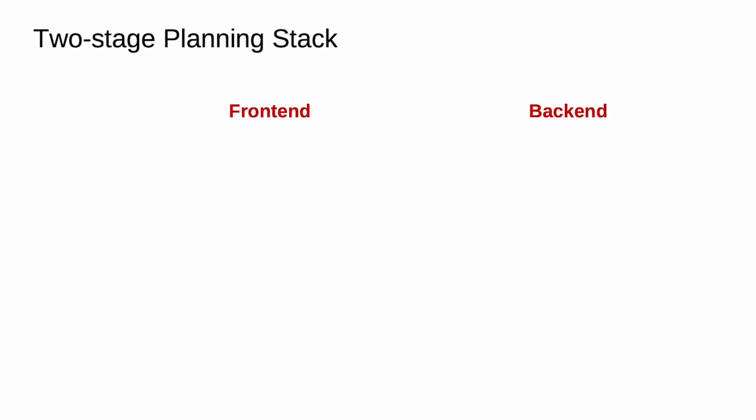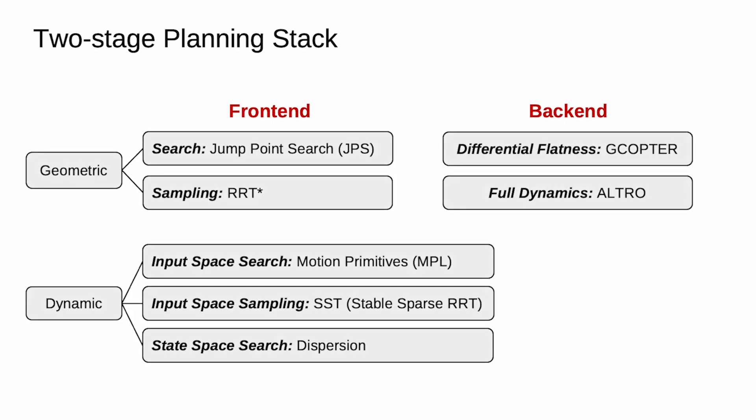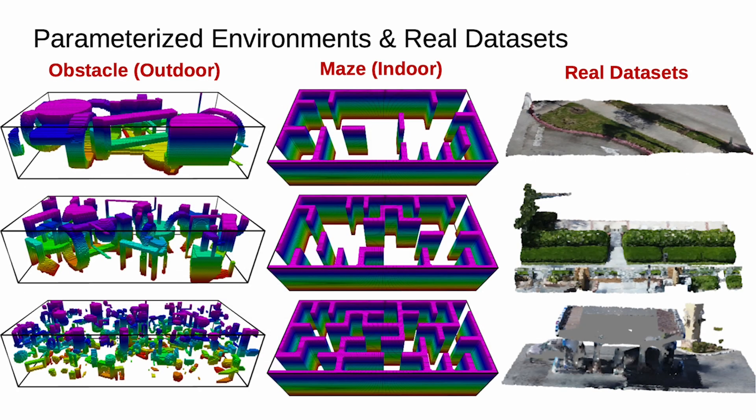For the open-source planning stack, we took a modular approach so that both front-end planners and back-end planners can be quickly swapped. We select five front-end planners with different levels of fidelity and two back-end planners with different assumptions on the vehicle dynamics. We run the planners in our proposed parameterized environments and real datasets.